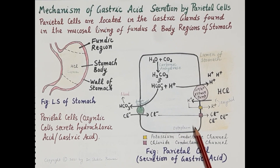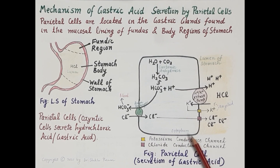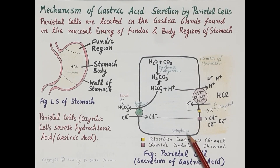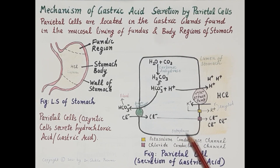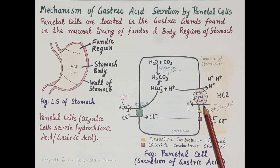This is the structure of the parietal cell, located in the gastric gland found in the mucosa of the stomach wall. Parietal cells possess hydrogen-potassium ATPase, an enzyme also called the proton pump.